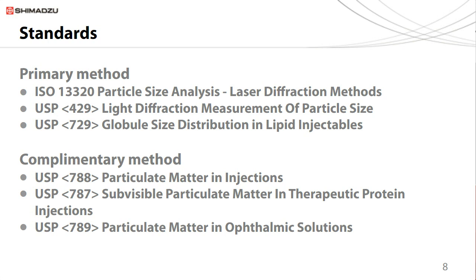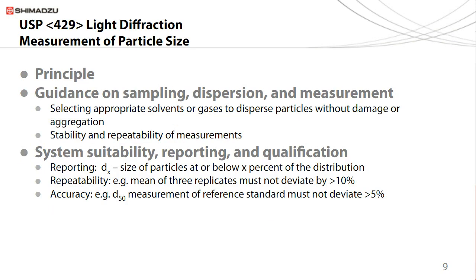They require single particle counting techniques such as light obscuration or flow imaging and require the measurement of the number of particles within various size ranges. USP 429 and ISO 13320 provide guidance on performing a particle size measurement. USP 429 starts with the basic definition and principle of operation of a laser diffraction system, then discusses various factors relating to sampling, dispersion, and measurement procedures. For instance, particles must be dispersed without causing aggregation or comminution. A liquid dispersant should not interfere with the measurement or dissolve the particles and should be free from bubbles.